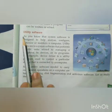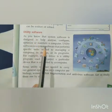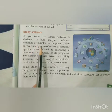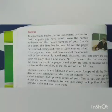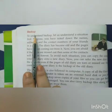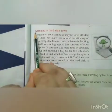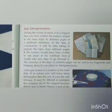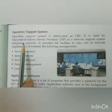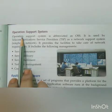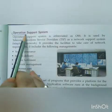Utility software manages the functions of all the components of a computer system and helps in the smooth working of the computer system. We also discussed some examples of utility software like backup, scanning, and disk defragmentation. Today we'll discuss one other type of system software, that is the Operation Support System.